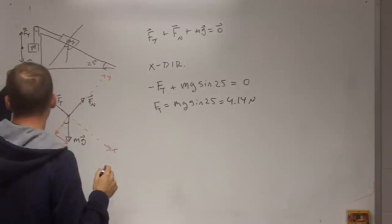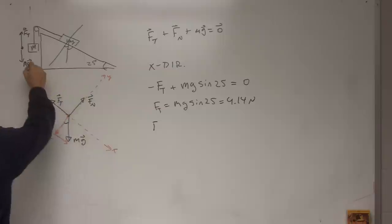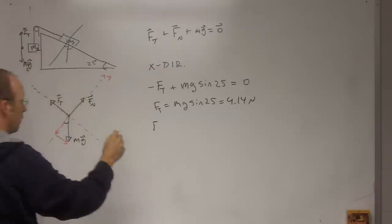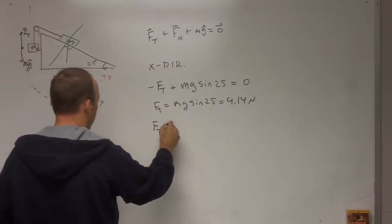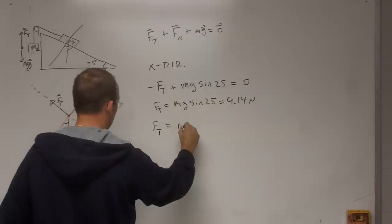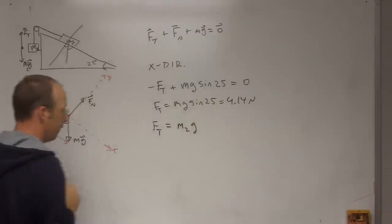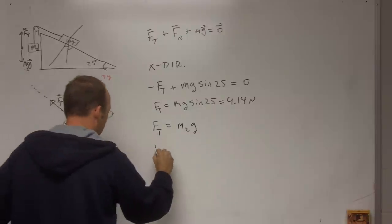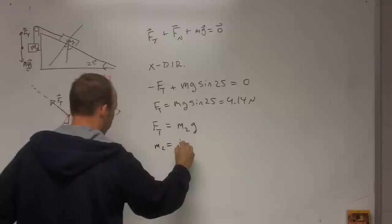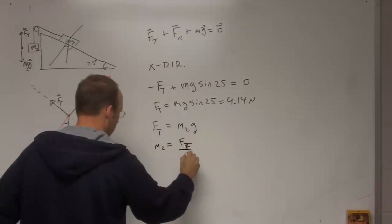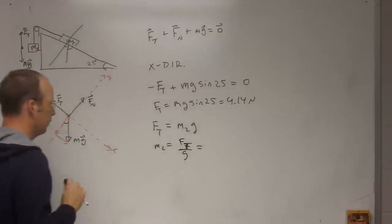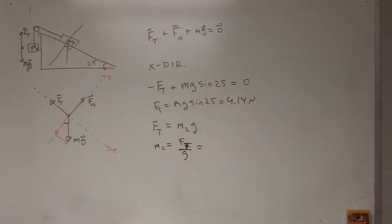And then over here, Ft - let's call this m2 - Ft also equals m2 g. I skipped some steps there. So m2 equals Ft over g, so that would just be 0.42 kilograms.